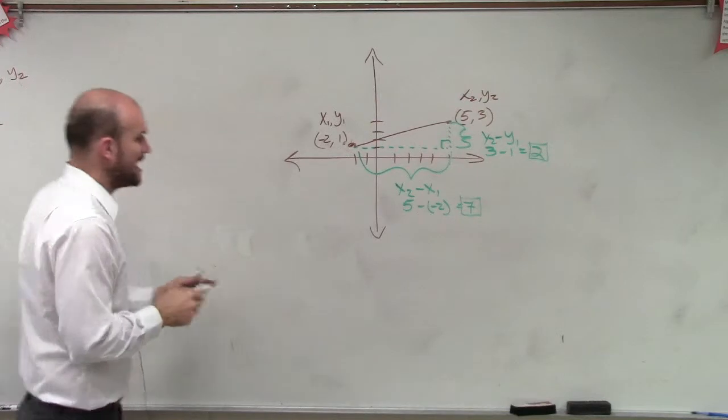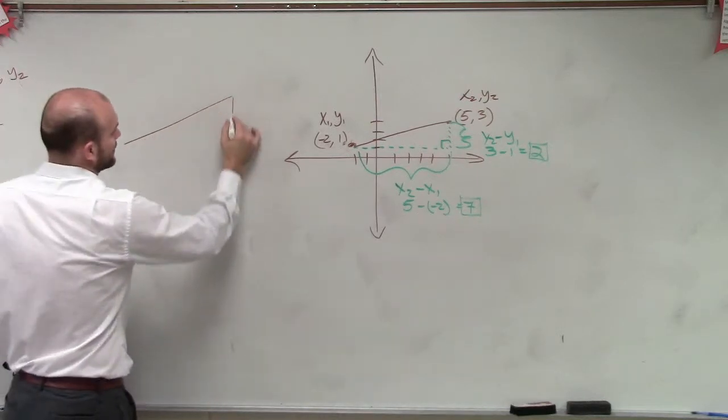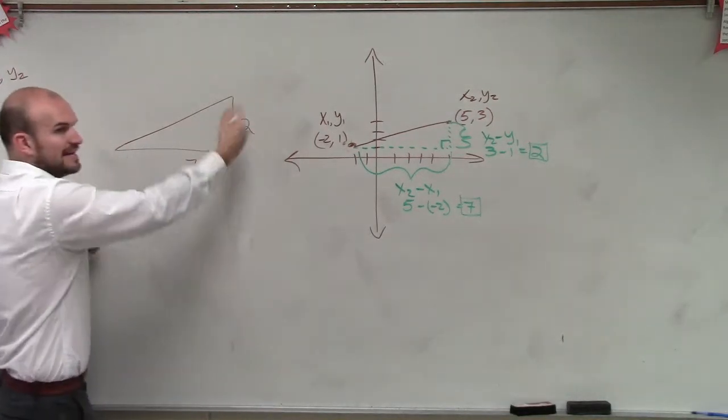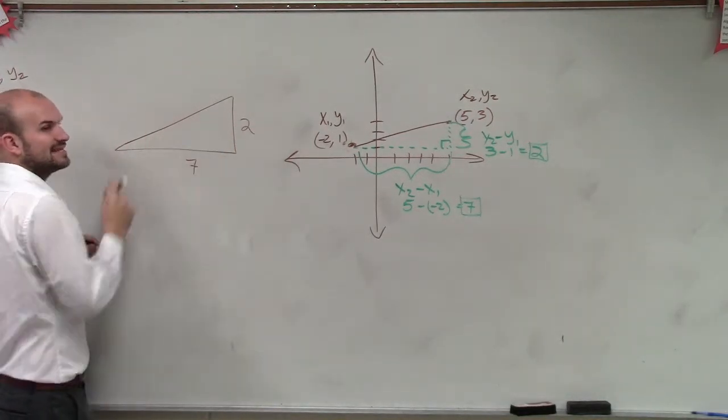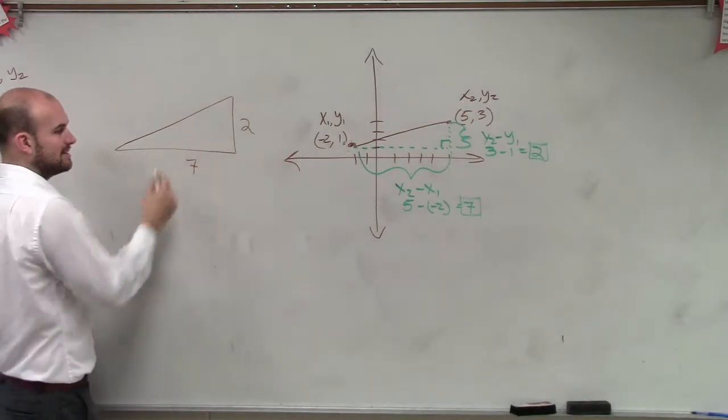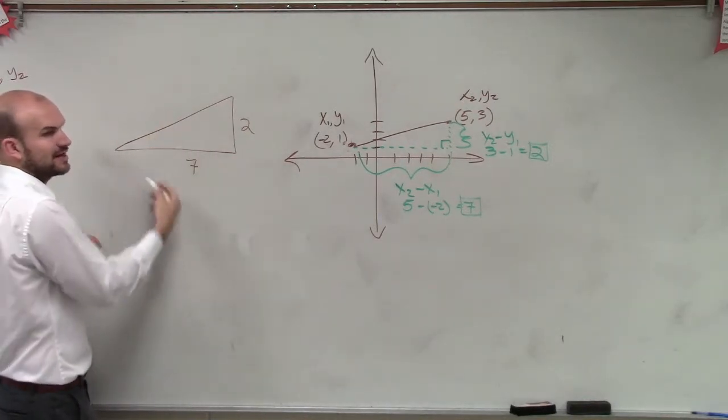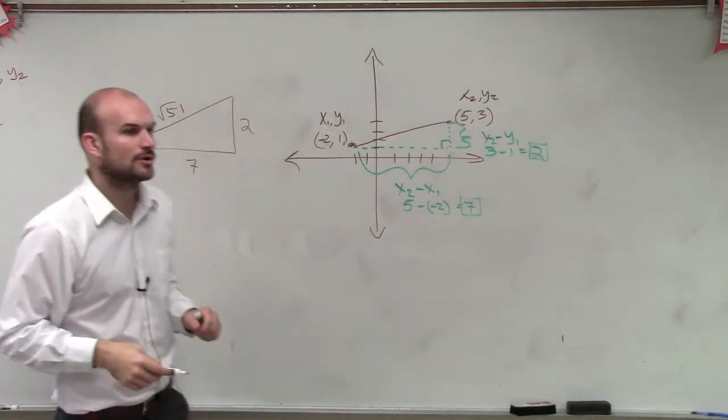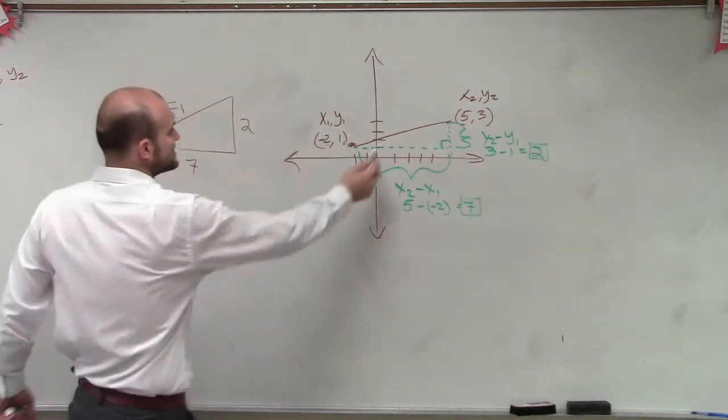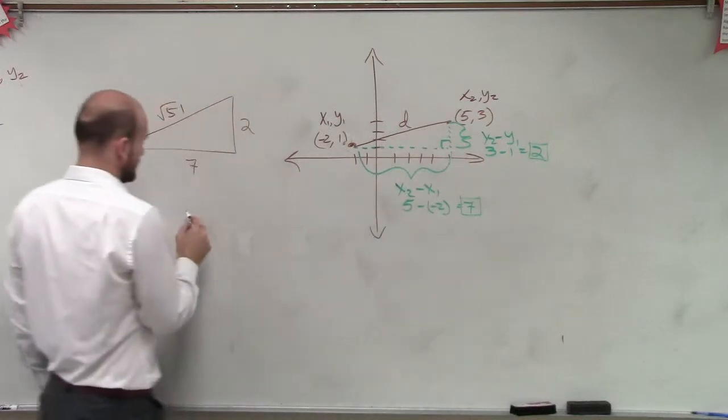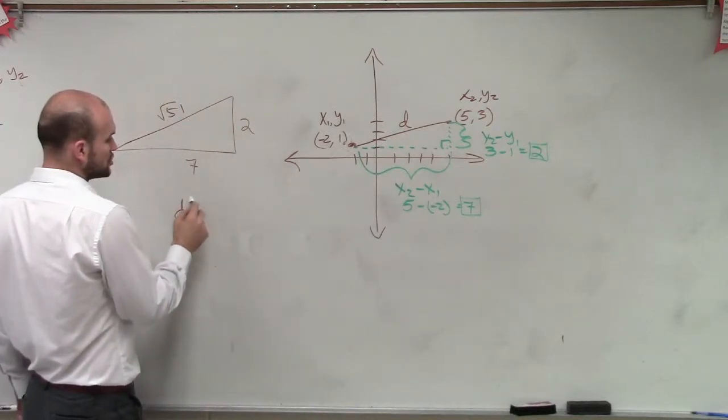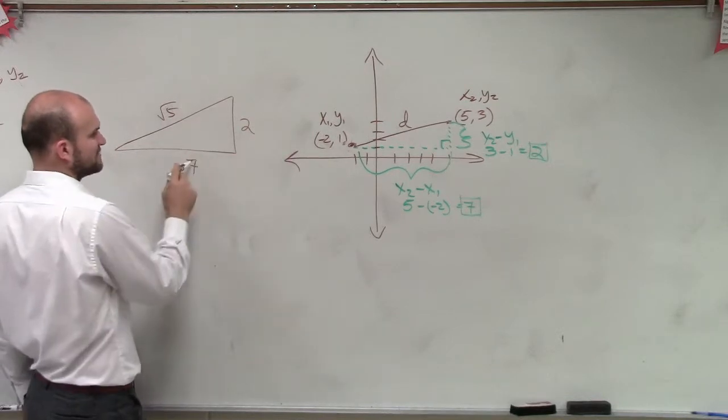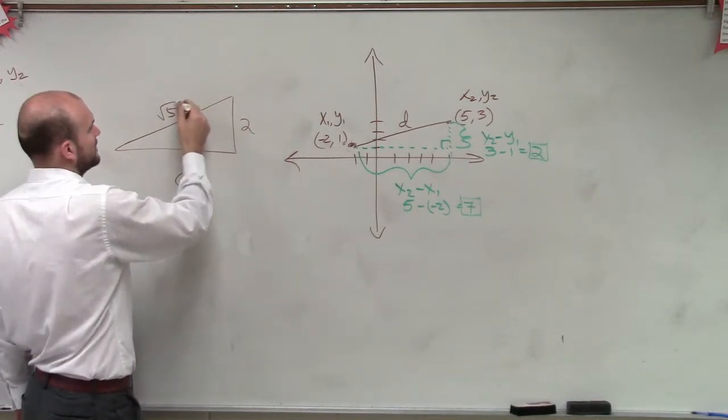So now what we have is I'm just going to redraw this triangle. So now I have a distance of 7 and a distance of 2. Now, knowing these two values, can I find this distance? Yes. So what we say is this distance is going to be the square root of 53. But what we're going to do is say this distance, which we'll call d, this distance squared equals 53.